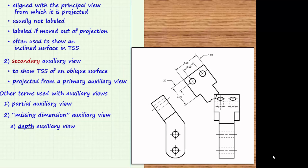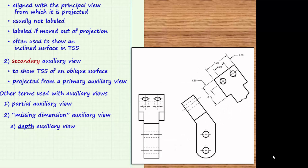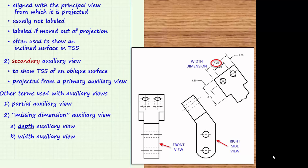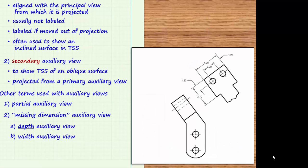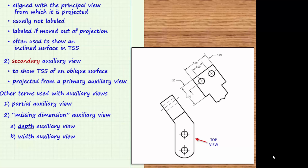If the two regular views are arranged so that the view on the lower left is the front view and the view on the right is the right side view, then the primary auxiliary view is projected from the right side view. In this case, the primary auxiliary view could be referred to as a width auxiliary view, because the right side view does not show the width dimension, but any view rotated 90 degrees from it will show the object's width. Lastly, if the one regular view shown is the top view, height information is missing from the top view, so any view drawn rotated 90 degrees from the top view will show it. So if the primary auxiliary view is projected from the top view, it will feature the height dimension and can be called a height auxiliary view.